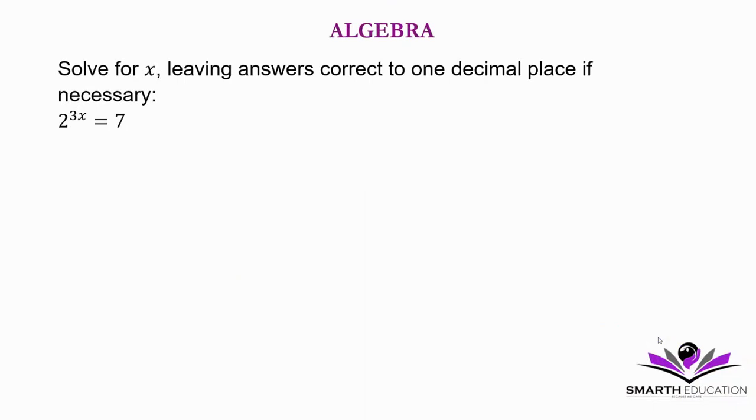Solve for x, leaving your answers correct to one decimal place if necessary. 2 to the power 3x is equal to 7.